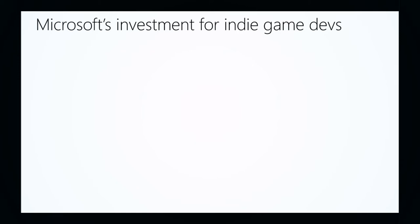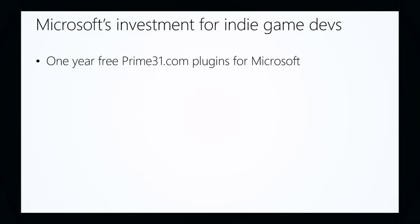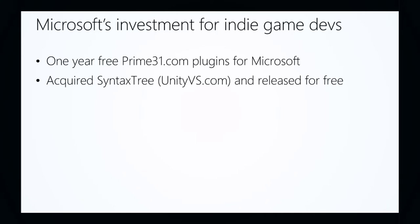Since we love gaming and work for Microsoft, let's go over some investments Microsoft has made. Prime 31 is a leading plugin writer for Unity — there's a year free for Prime 31 plugins for Microsoft developers. Microsoft also acquired Syntax Tree, makers of Unity VS, which enables you to use Visual Studio to develop and debug your Unity code. Previously it was a $100 product; Microsoft bought the company, added features, and now releases it for free. Developers normally start with MonoDevelop, which is free with Unity, but Visual Studio has historically cost money.